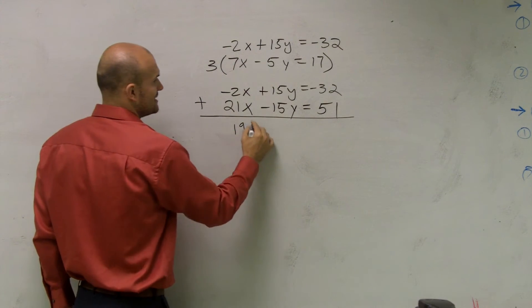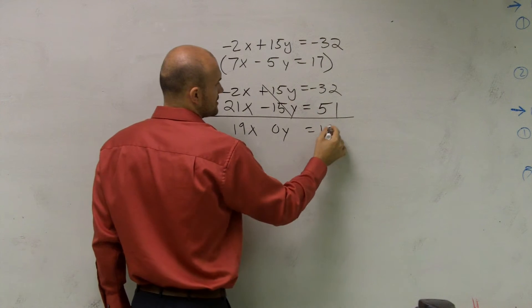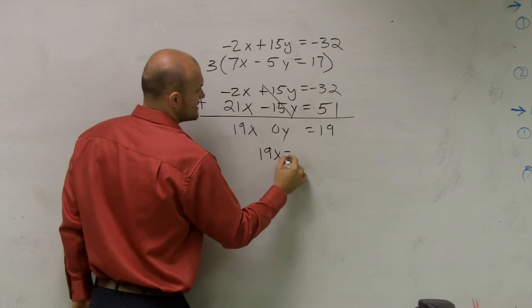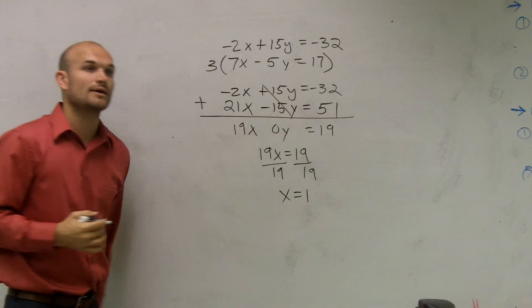Now I simply add. I get 19x. That becomes 0y equals 19. 19x equals 19. Divide by 19. X equals 1.